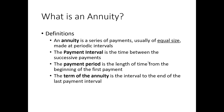The payment interval is the time between successive payments. The payment period is the length of time from the beginning of the first payment. And the term of the annuity is the interval to the end of the last payment interval. So the key thing is: annuity payments are of equal size, occurring at regular intervals.